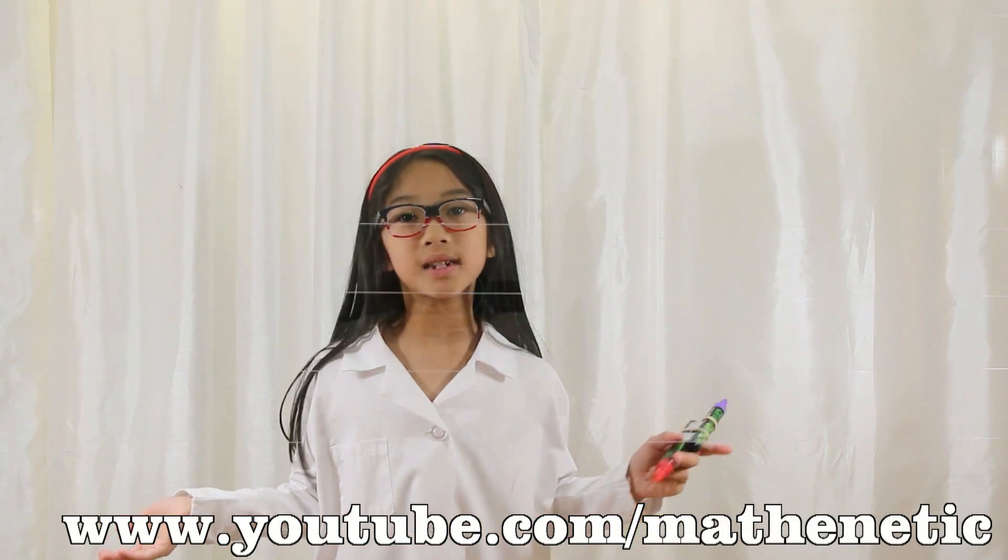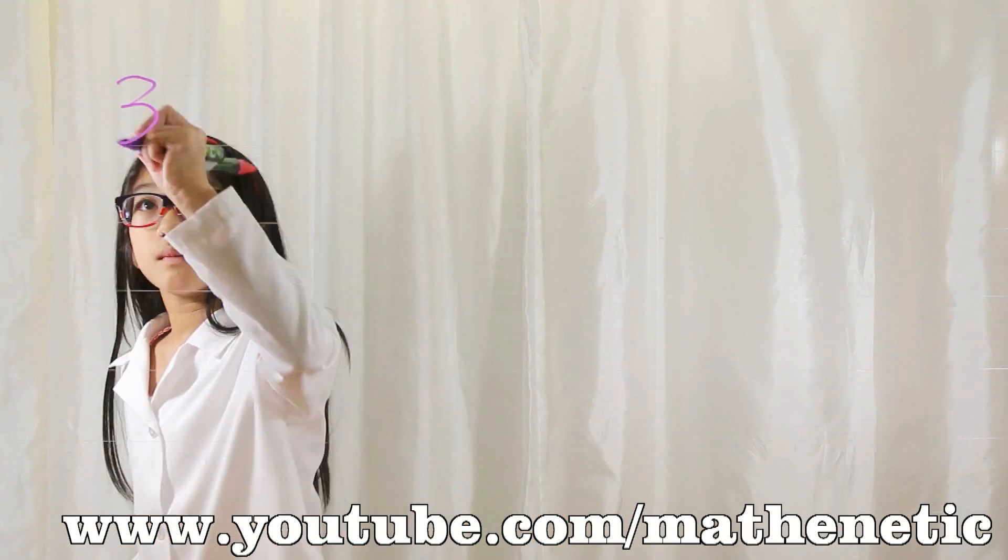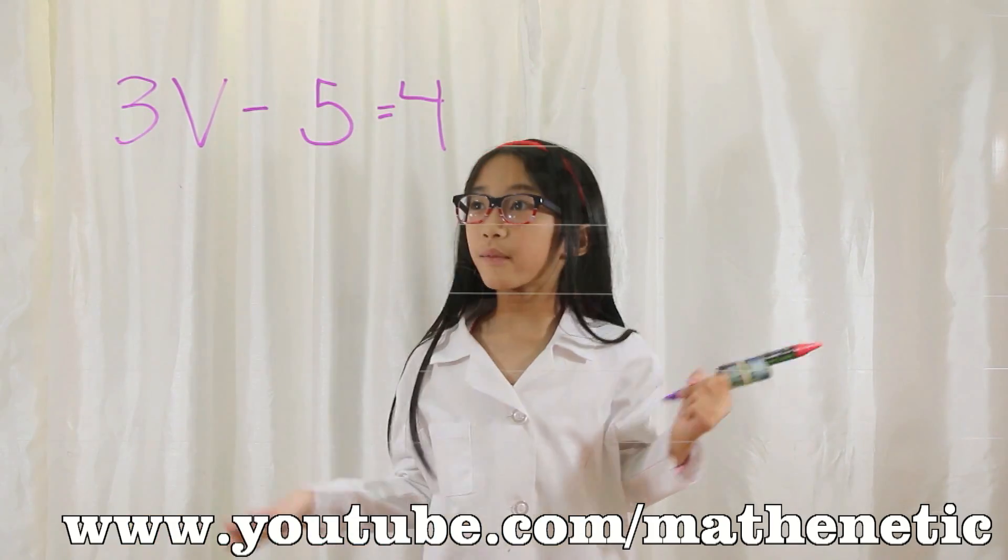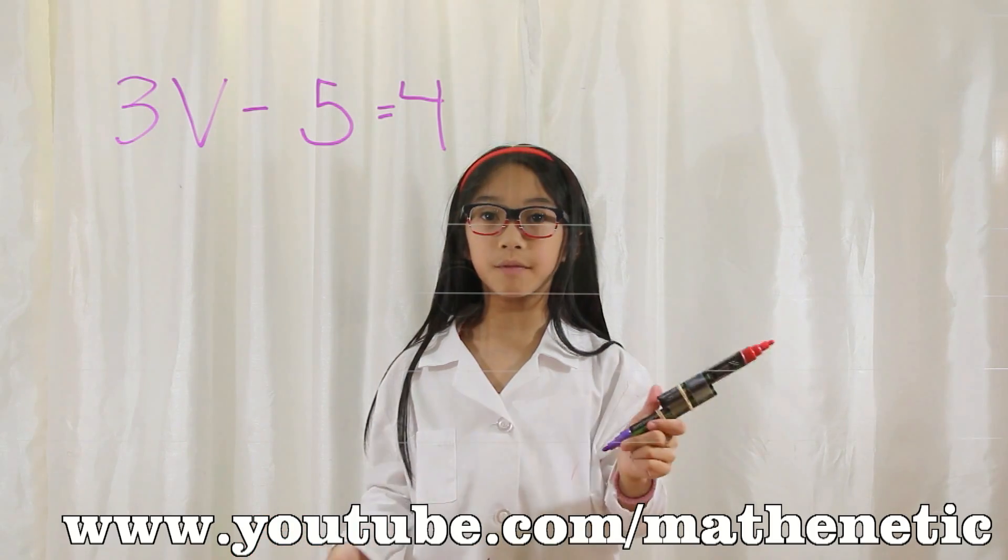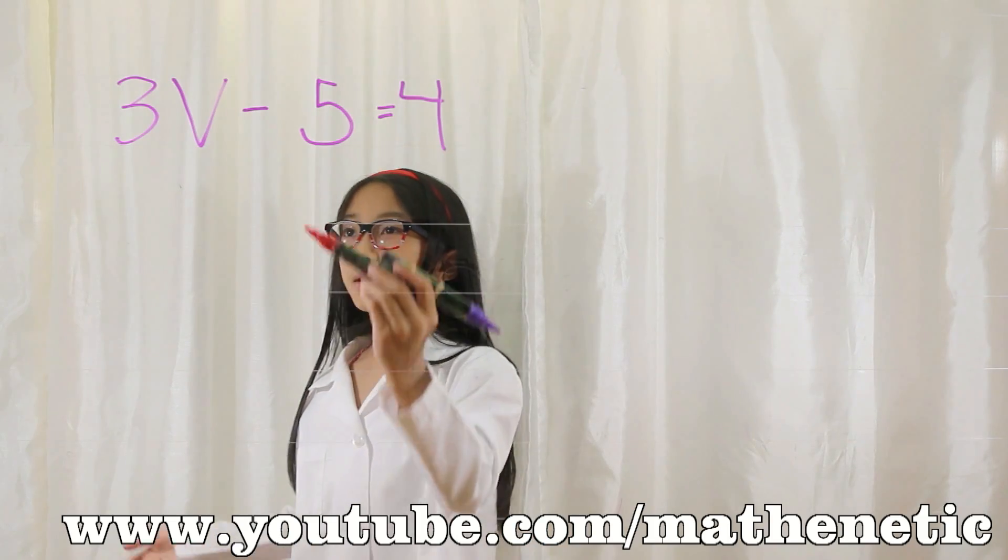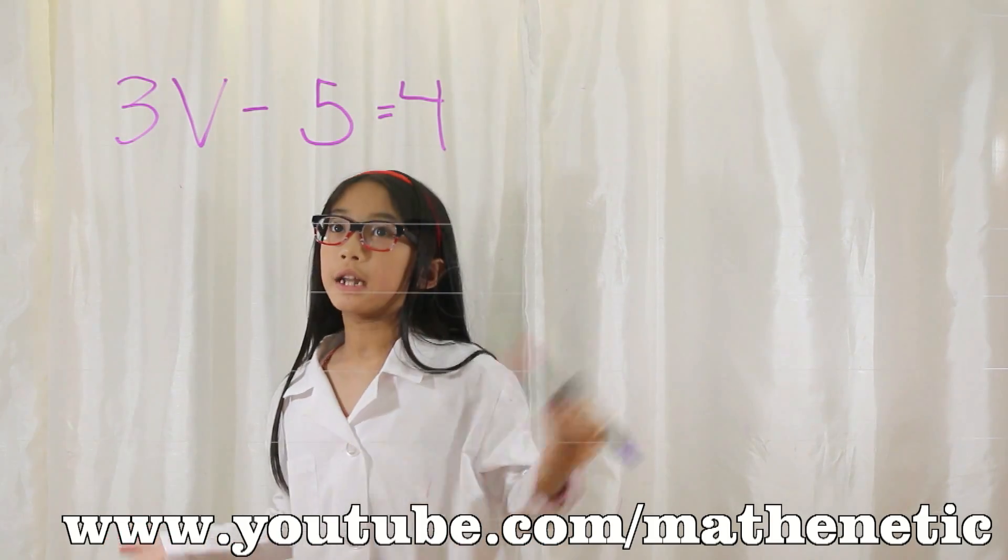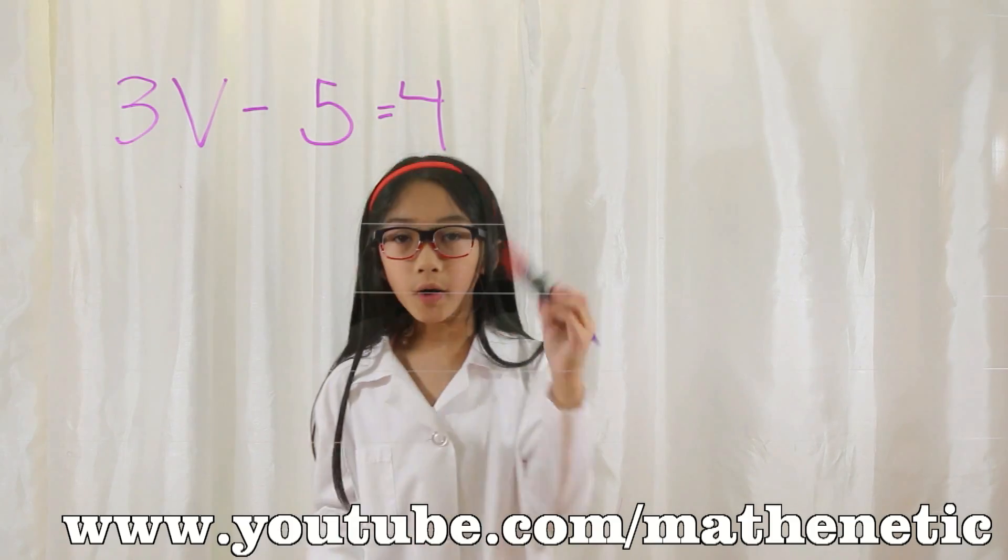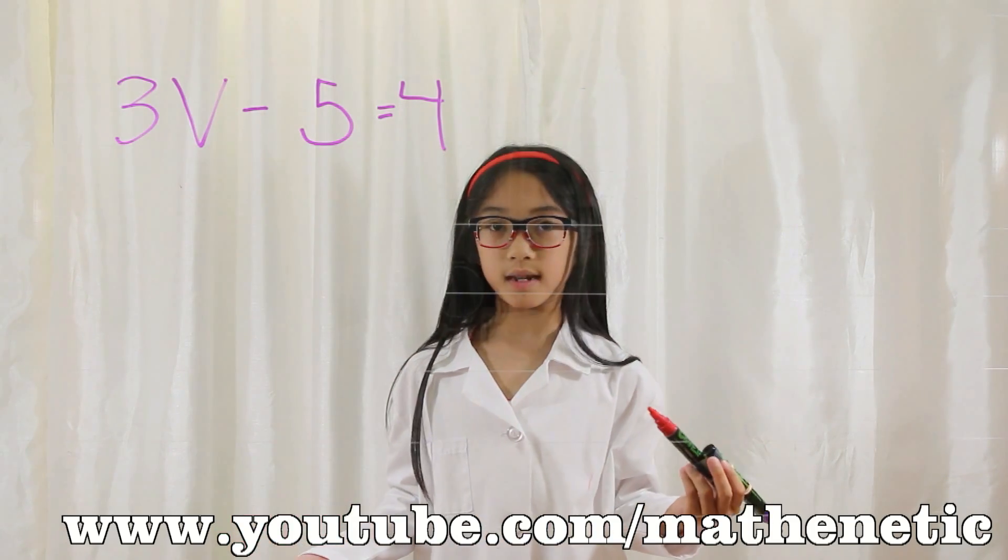Let's say your equation is 3v minus 5 equals 4. Now that I've written down 3v minus 5 equals 4, let's notice some things in the equation. V is a variable with 3 as its coefficient. Negative 5 and positive 4 are the constants.